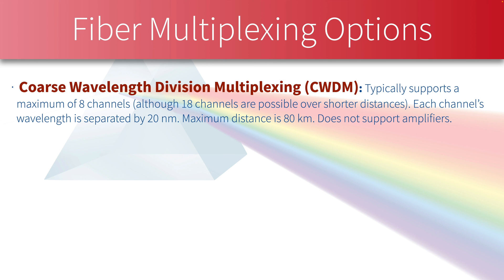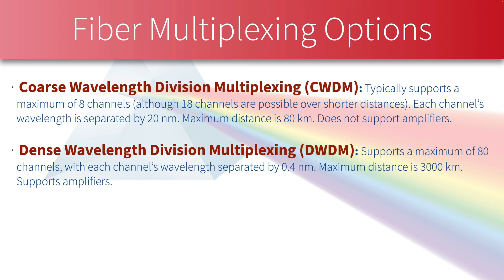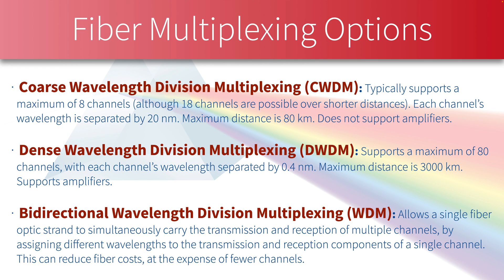If we need more channels and longer distances, we turn to Dense Wavelength Division Multiplexing, or DWDM. DWDM supports as many as 80 channels, with only 0.4 nanometers of gap between adjacent lambdas — much more precise than CWDM's 20 nm. DWDM supports a maximum distance of approximately 3,000 kilometers and, unlike CWDM, it supports amplifiers, enabling those incredible distances. A third type is Bi-Directional WDM (BiDi WDM), where a single fiber strand uses one lambda to transmit and a different lambda to receive simultaneously.